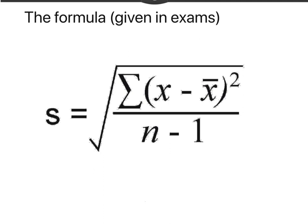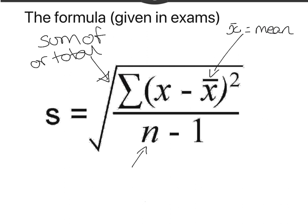Let's get straight into looking at the formula. This formula is given to you in the exams. A couple of new symbols: this thing here means the sum of or total. This one, x-bar, means our mean. And n stands for the number of numbers on our list, so this is our sample size.